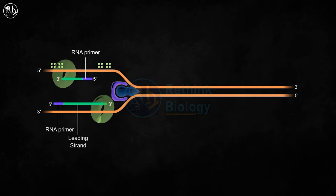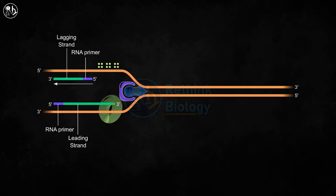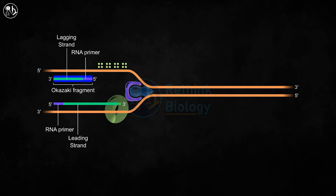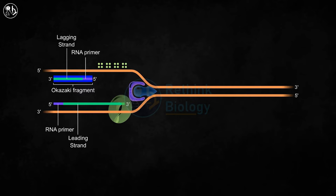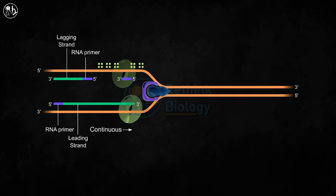This new DNA is made in the opposite direction to the replication fork movement, and that is why it is called the lagging strand. The short segments of DNA which are being produced during lagging strand formation are called Okazaki fragments. On the other hand, the leading strand's DNA synthesis is continuous. The lagging strand template runs in the opposite direction to the leading strand template.